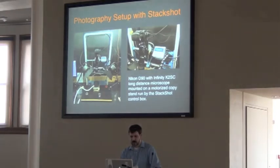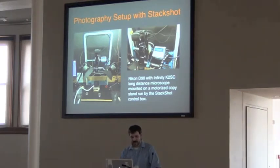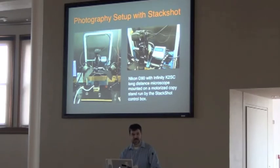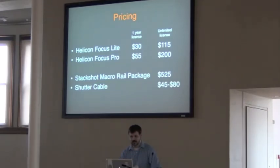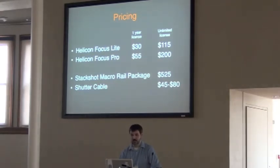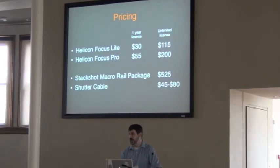This is a photography setup from our malacology department — they're also doing a type imaging project, using this rig to do very small shells, a couple of millimeters in length. It's a Nikon V90 with an Infinity K2SC long-distance microscope lens on it, on a motorized copy stand modified to use the Stack Shot control box — so they set a bottom and top and it does it automatically. As far as pricing: an unlimited license of Helicon Lite is $150, Pro is $200, the Stack Shot macro rail package is about $525, and the shutter cable is about $458.